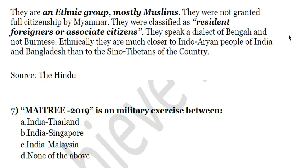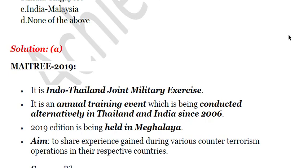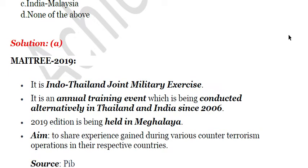The seventh question: MAITRI 2019 is a military exercise between — A) India and Thailand, B) India and Singapore, C) India and Malaysia, D) none of the above. The answer is A, India and Thailand. MAITRI is a military exercise between these two countries. It is an annual training event conducted alternately in Thailand and India since 2006.